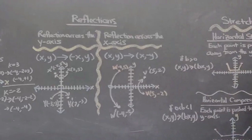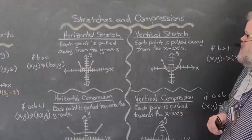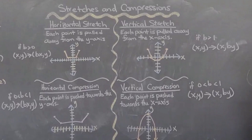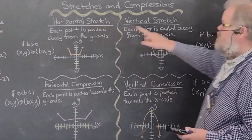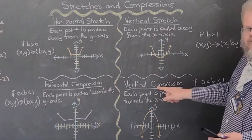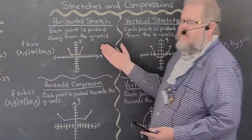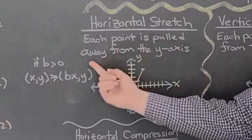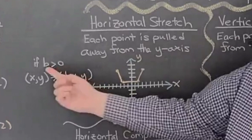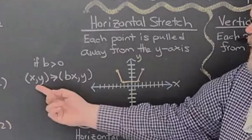Now the last topic: stretches and compressions. This category has four parts — horizontal stretching, vertical stretching, horizontal compression, and vertical compression. Stretching and compression involves multiplying your ordered pair by a number. For a horizontal stretch, each point is pulled away from the y-axis, and B must be greater than one.